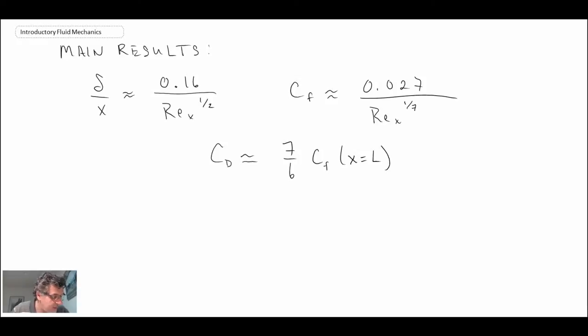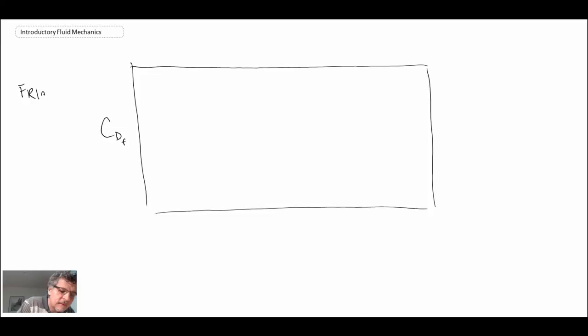The last thing that I want to say about this is that there are plots that exist that are very much like the Moody diagram. If you recall, we looked at the Moody diagram for pipe flow. But what these plots have is the friction-drag coefficient plotted as a function of Reynolds number. Now, unlike the Moody diagram, it's not always plotted log-log. Sometimes it's log-linear.